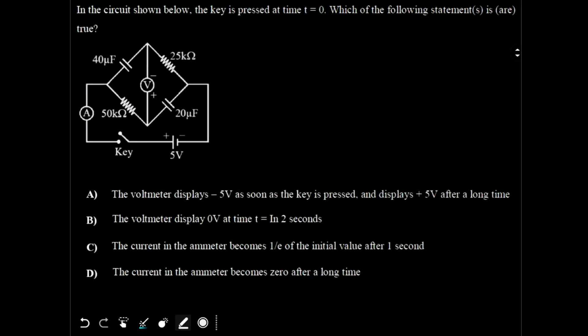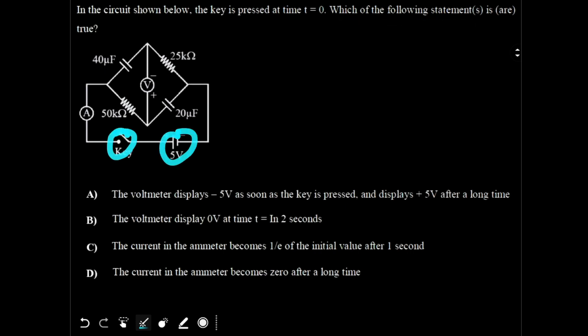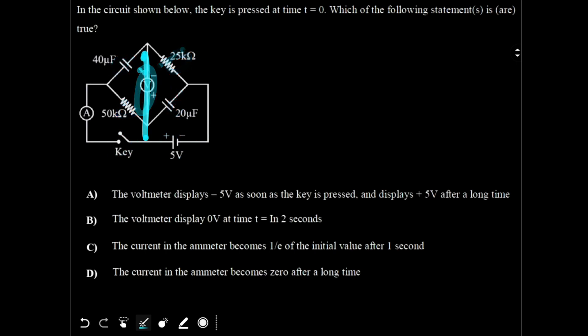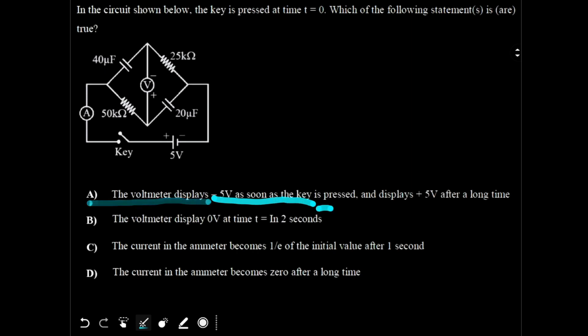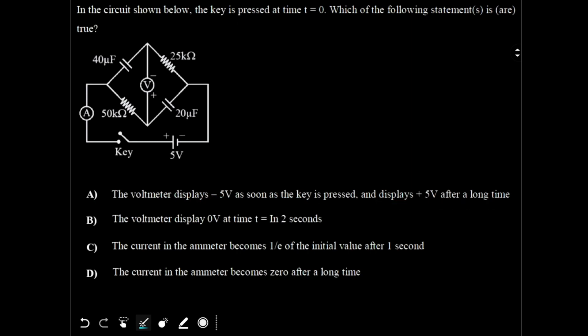Let's look at this question. In the circuit shown below, the key is pressed at time t equal to 0. Which of the following statements are true? We have the circuit with a key, battery, two capacitors, two resistors and a voltmeter. The voltmeter is ideal. We have four options and more than one option may be correct. At t equal to 0 and t equal to infinity, we have to see how the circuit behaves after closing the switch.